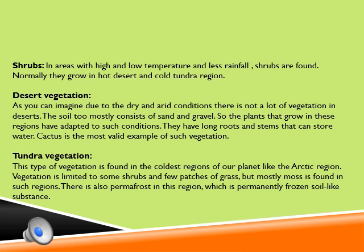Desert vegetation is usually found in hot and dry deserts — in the western part of tropical and subtropical regions. These areas experience very high temperatures and very low rainfall. Therefore the vegetation here has thorns and wax-coated leaves, thick and spongy stems, and long roots. Examples include cacti, thorny bushes, and coarse grasses. The vegetation is scarce due to the scanty rainfall.